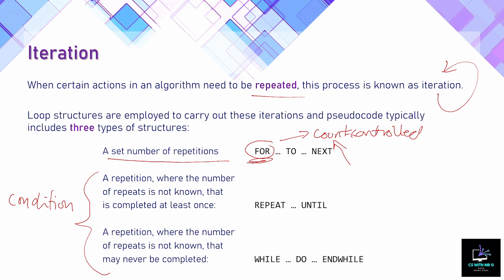The next two are both called condition controlled. Imagine combining an if statement with a loop — that's kind of what we have here. With an if statement we have a condition the algorithm has to meet, and in the condition controlled loop we also have a condition. The difference between the two is that one checks before and one checks after. The repeat until loop is what we call a post condition loop, because after the loop starts we then check for the condition.